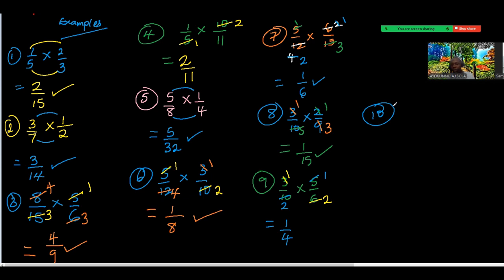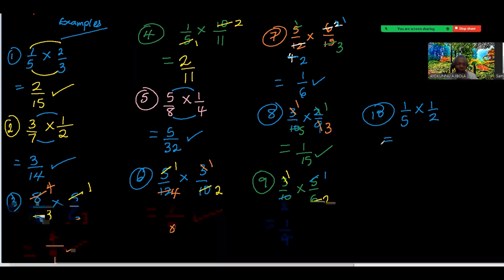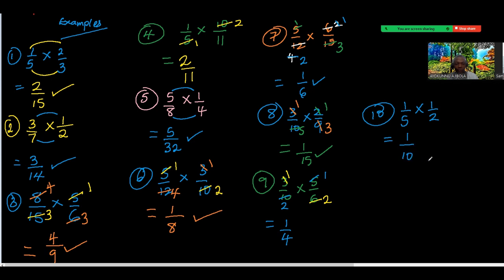The next one is 1 over 5 times 1 over 2. Is there anything common? No. So we have 1 over 10. I'll give you some time to write this down then I'll give you some to try.